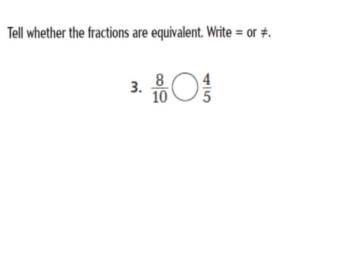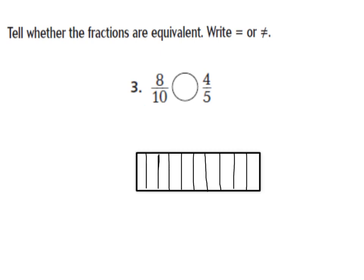Let's look at number three. It says tell whether the fractions are equivalent — write equal or not equal. We need to look at eight-tenths and four-fifths and see if they are equal. I'm going to use models. My first model shows eight-tenths: a fraction bar broken up into ten equal parts, and I shade in eight of those ten parts — one-tenth through eight-tenths. So this is eight-tenths shaded.